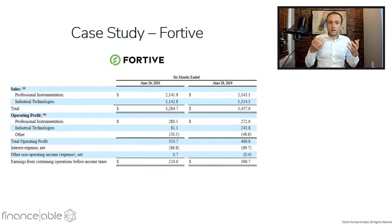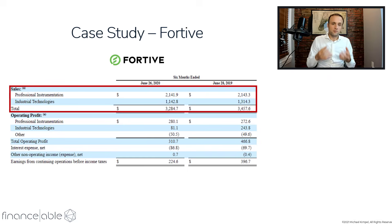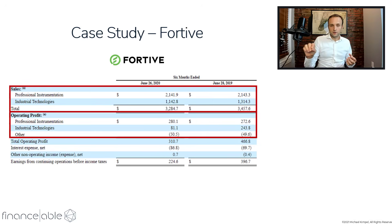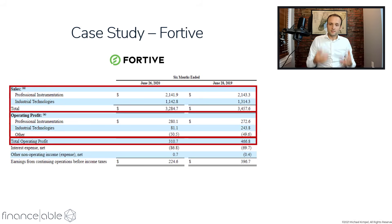Now let's look at a real-life case study of operating leverage in action with Fortiv, an industrial conglomerate spun out of Danaher a few years ago. We're going to look at their numbers as of Q2 2020 — right after the pandemic hit — when their revenue declined. We'll look at revenue data by segment as well as operating profit by segment. Note that within their segments, there's an 'other' segment that is basically just fixed costs, so when we get to total operating profit, we'll see a much higher degree of operating leverage than within the individual units.